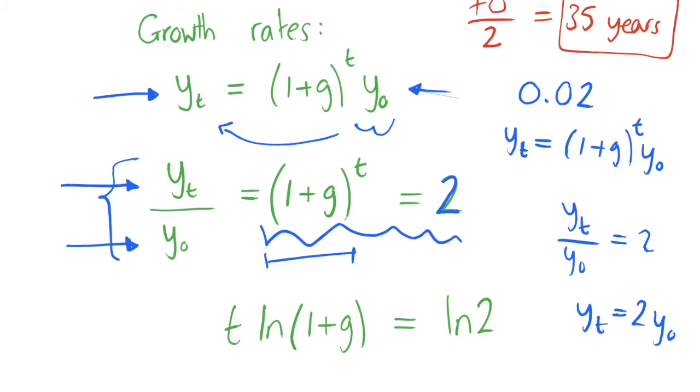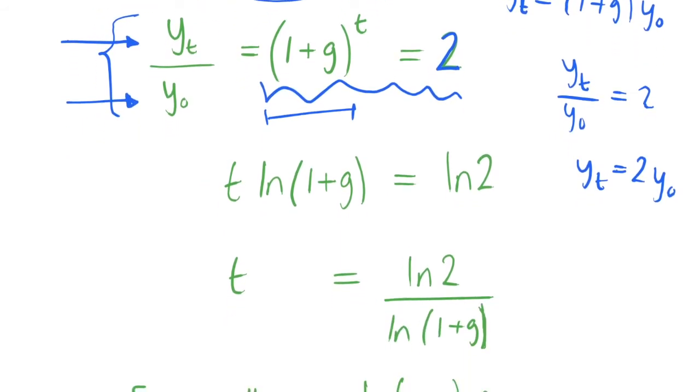What we can do in the next line is just take logarithms of both sides of the equation. We take the natural log, so we pull down this t which is the power in the equation, and we get t natural log of 1 plus g is equal to the natural log of 2 on the right-hand side. We can just rearrange to get that t is equal to the natural log of 2 over the natural log of 1 plus g.